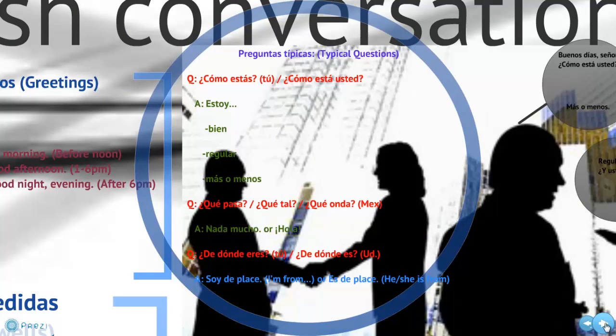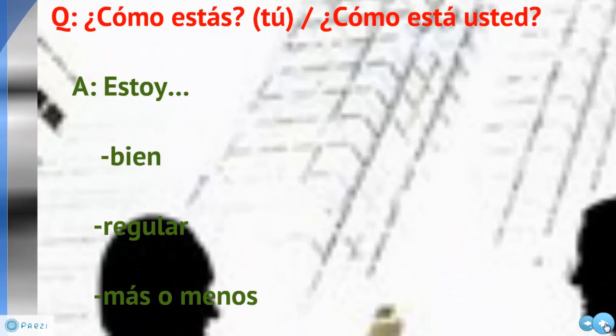So what are some typical questions we use in conversation? The first question is cómo estás, which you use informally. If it were formal, you would say cómo está usted. Both mean 'how are you?' Ways to answer back: you would say estoy bien, meaning 'I'm good.'